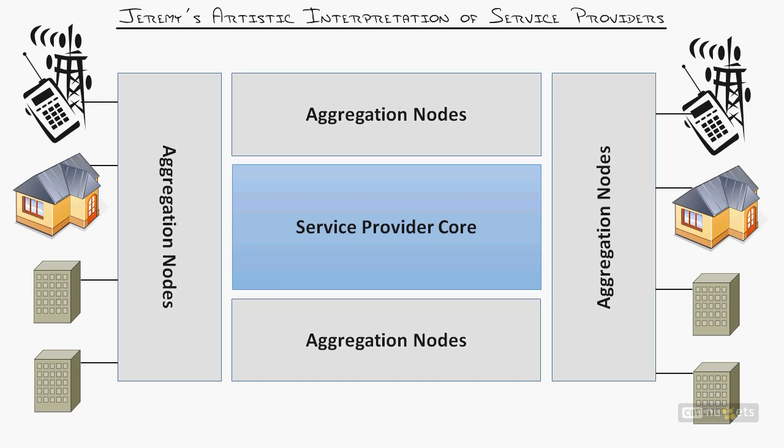Then we'll slowly step in piece by piece and unpack these elements. From this 10,000-foot view that we're looking at here, you have aggregation nodes and a service provider core — the two major elements of this.